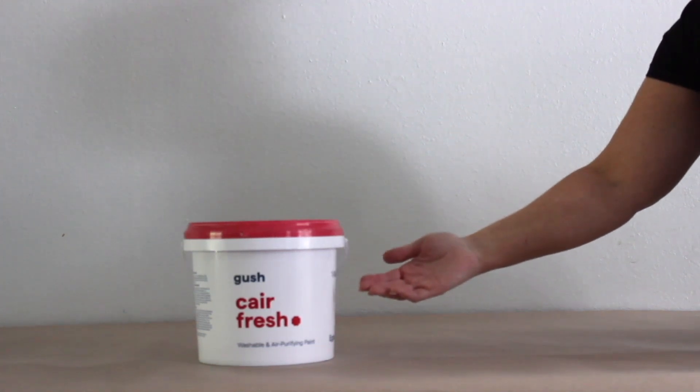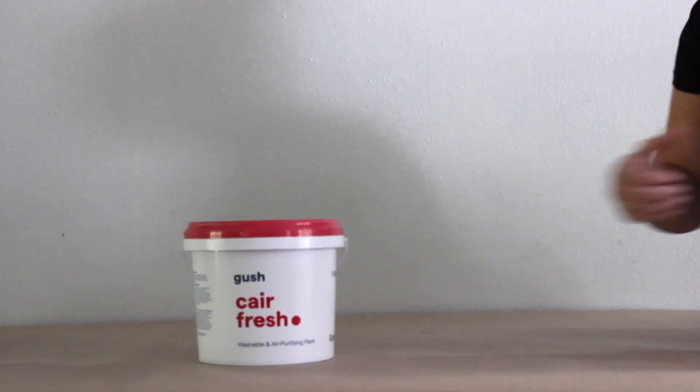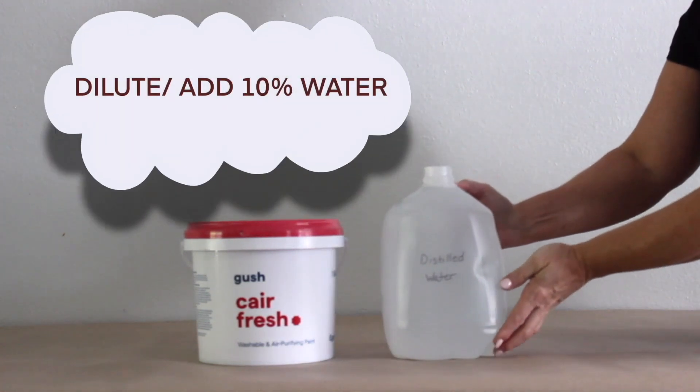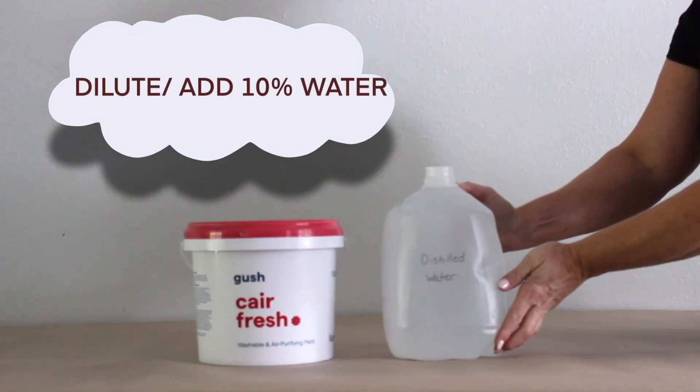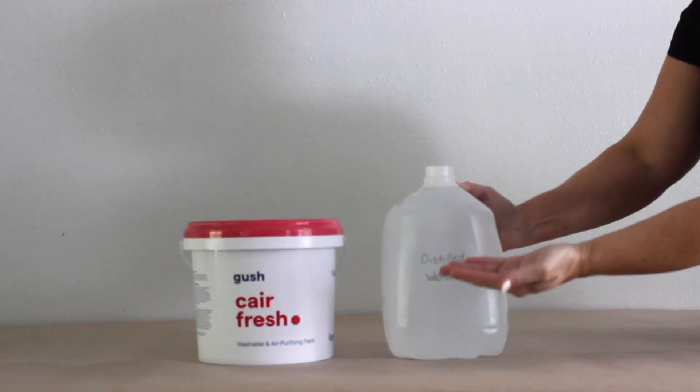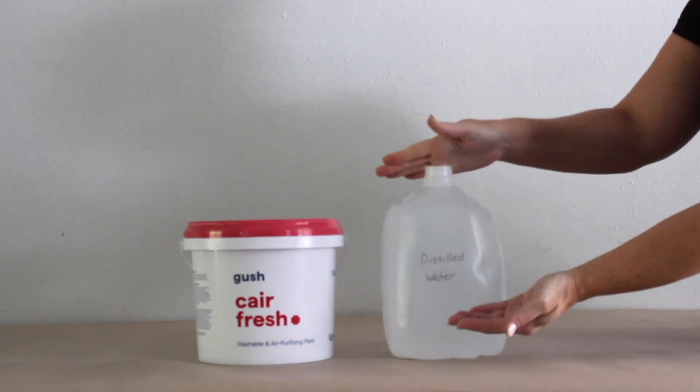Gush air purifying paint is much thicker consistency than your typical paint, so it's highly recommended that you dilute it with no more than 10% clean water. You can use tap water, however it's highly recommended to use the cleanest. Here we have distilled water.